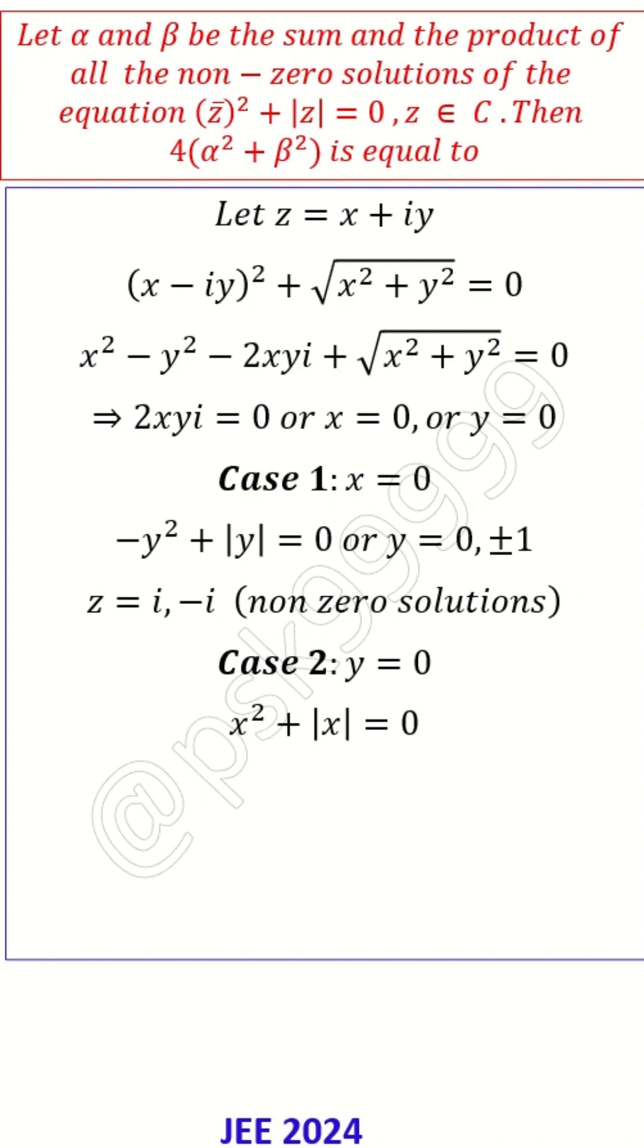So if x = 0 and y = 0, then it's a zero solution, so we should not consider that. So this case 2 is not considered.